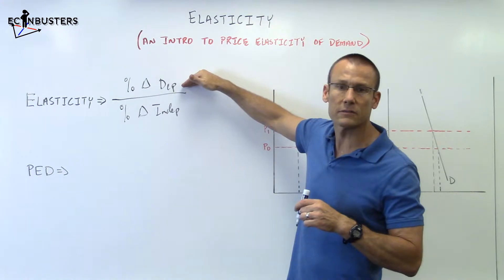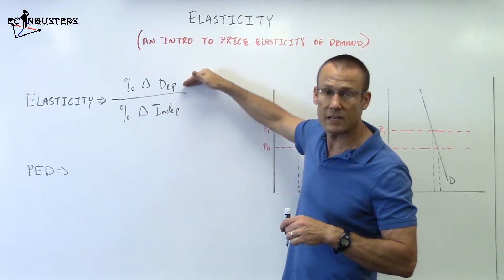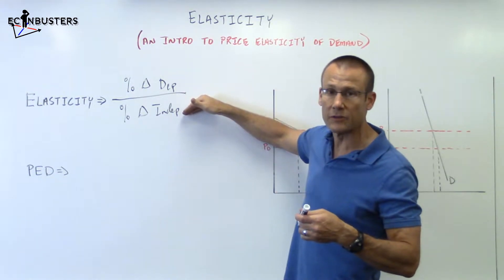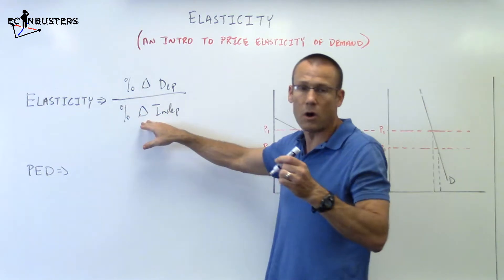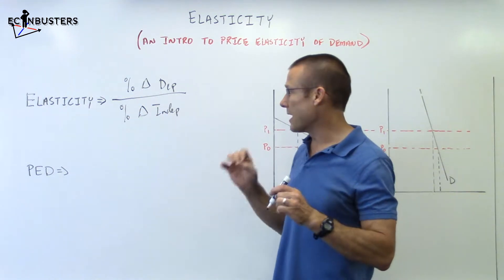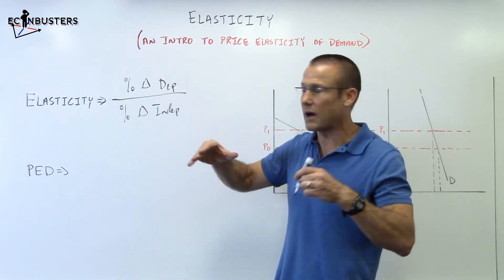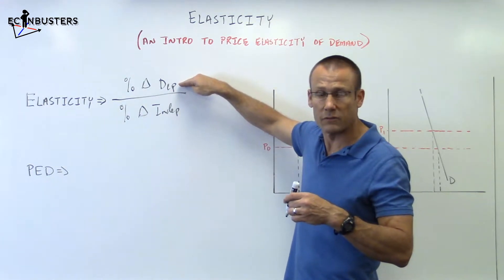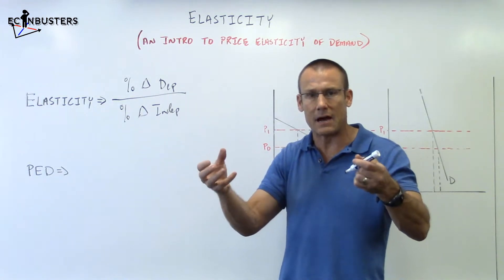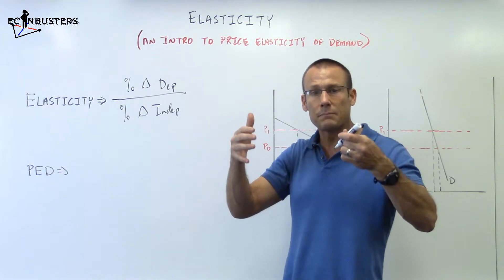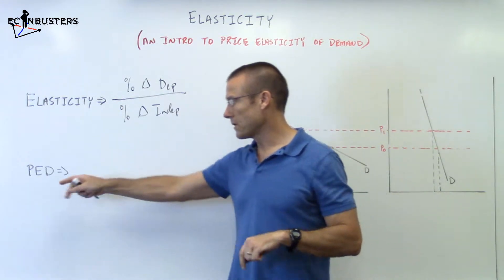If the percent change in the dependent variable is quite large relative to the percent change in the independent variable, we say it's elastic — the dependent variable is responding a lot to a small change in the independent. If the percent change in the dependent is quite small relative to a large change in the independent, we say it's inelastic — the dependent is not responding much to a fairly large change in the independent.